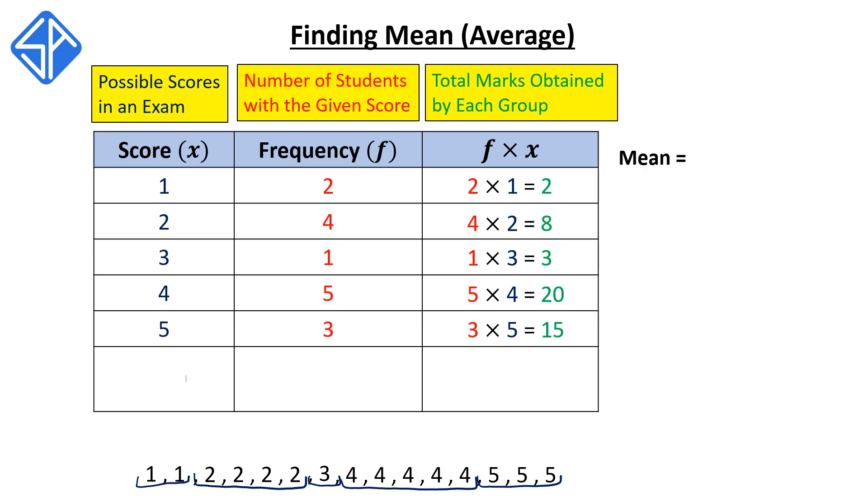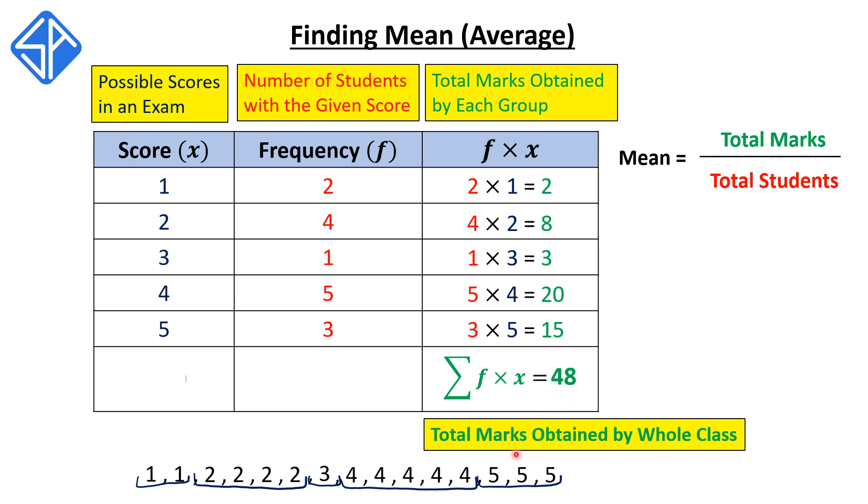Then to find the mean or the average, we know that it is defined as the total marks by the class divided by the total number of students in the class. So to find the total marks, we need to add up the f times x column. This gives us sigma f times x. And when we add this up, this is equal to 48. So this number 48 represents the total marks obtained by the whole class.